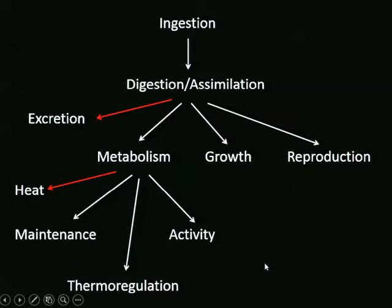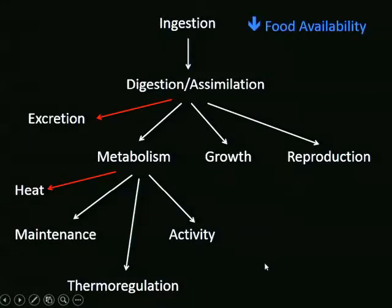We think about plasticity in nutrition using basic bioenergetics models: an animal ingests food, digests and assimilates energy and nutrients, which are used for metabolism, growth, and reproduction. Any one aspect that changes results in changes elsewhere—animals must compensate. For example, if food availability decreases and animals ingest less, they may put less toward growth and reproduction, decrease activity, or increase activity to search for more food.